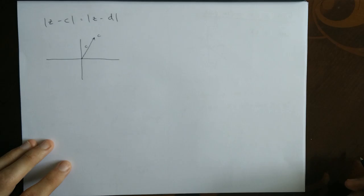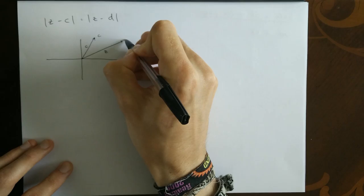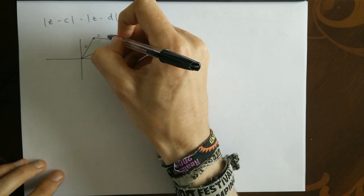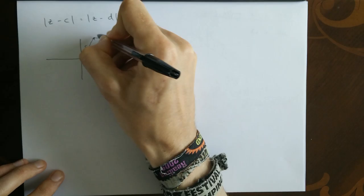If I pick a point z, go over here and draw z. It's going to some random point. This is what I'm going to change around. c is fixed, but z is variable. This arrow going from c to z, that's actually the complex number z minus c.